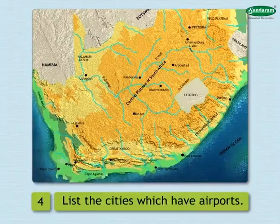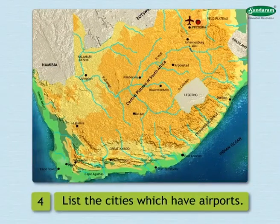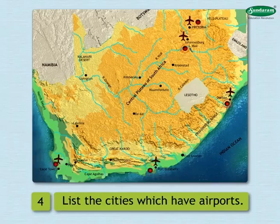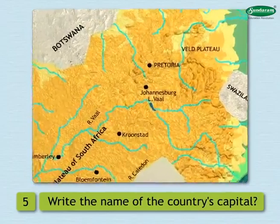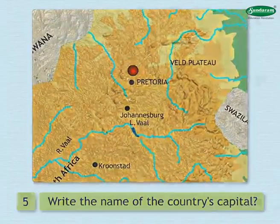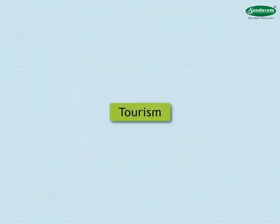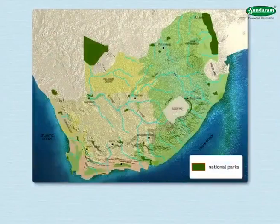4. List the cities which have airports. Cities like Pretoria, Durban, Cape Town, Port Elizabeth, and Johannesburg have airports. 5. Write the name of the country's capital. The country's capital is Pretoria.